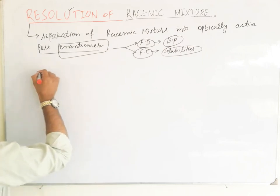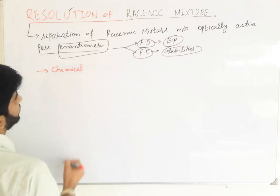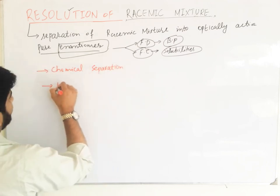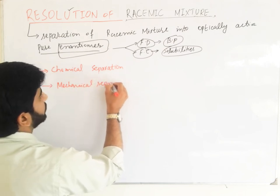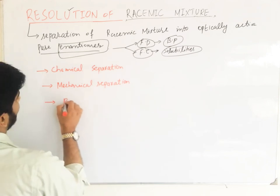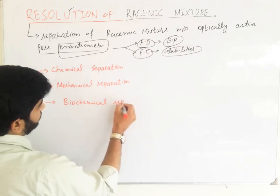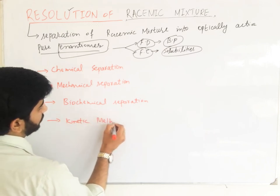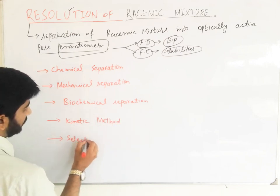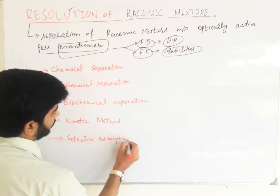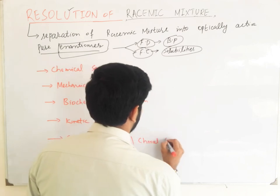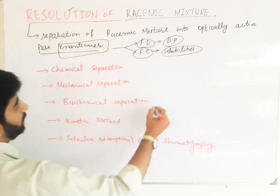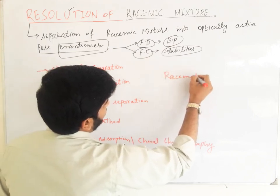The following methods are used to separate the racemic mixture into its pure enantiomers: first is chemical separation, mechanical separation, biochemical separation, kinetic method, and selective adsorption or chiral chromatography. These are all the techniques used to separate the racemate into their pure enantiomers.